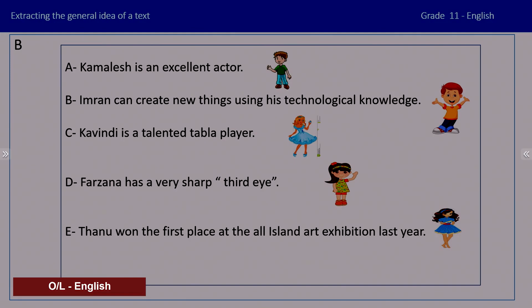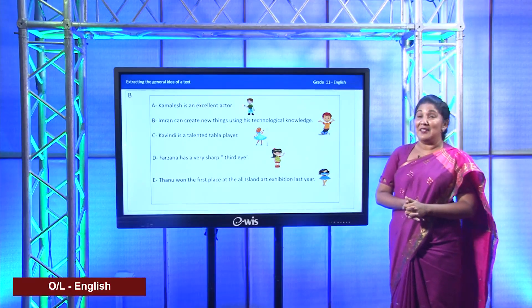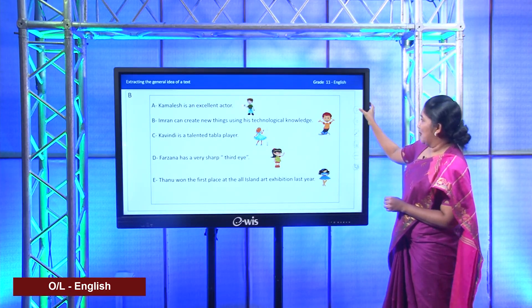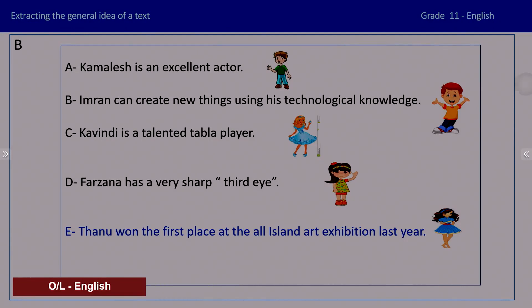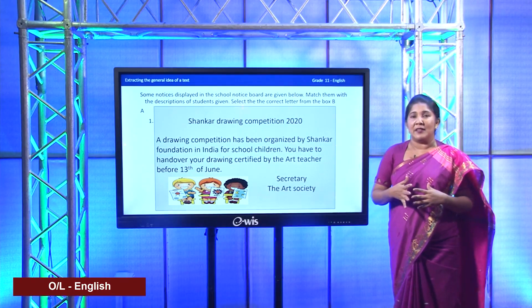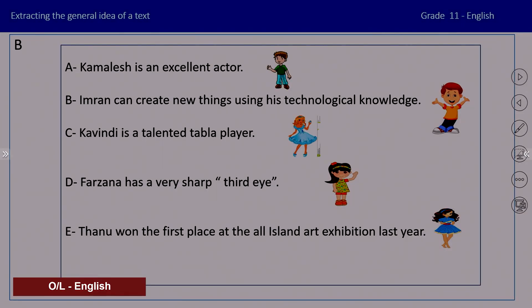And then you have: Danu won the first place at the All-Island Art Exhibition last year. I know that you must be very happy when I read that last answer. So let's get back to the text we saw earlier. We have been discussing the student who is very talented in art and who won a prize. By reading this notice and looking at certain words, you got the general idea that this particular child can go for the competition - it's Danu, who won the first place in the arts competition last year.